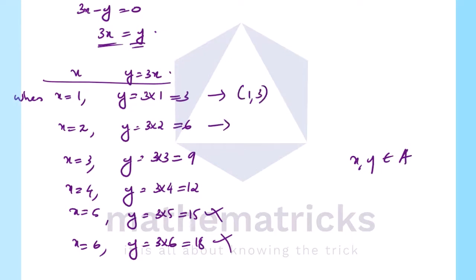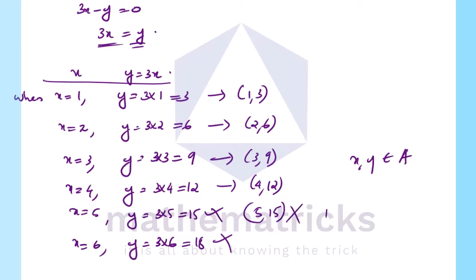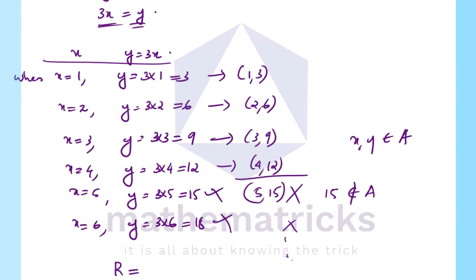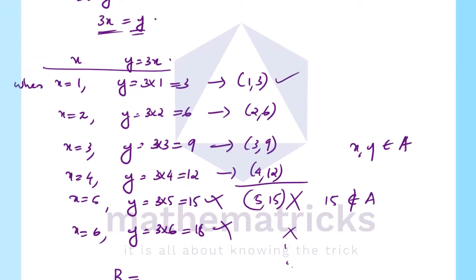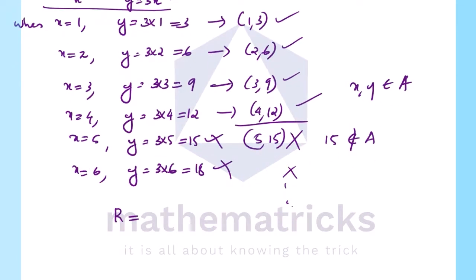Since 15 does not belong to A, the pair (5, 15) is excluded. We have only 4 valid values in the relation. The relation is the set of all (x, y) satisfying 3x minus y equals 0 where both x and y belong to A. So R equals {(1,3), (2,6), (3,9), (4,12)}.